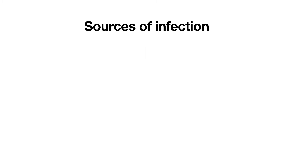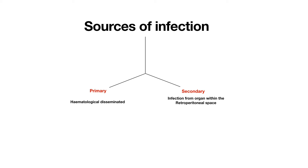Based on sources of infection, retroperitoneal abscess can be divided into two groups: primary or secondary. In primary retroperitoneal abscess, the infective source is usually due to hematological dissemination. In secondary retroperitoneal abscess, the infection is usually from an organ which lies within the retroperitoneal space. Hematological dissemination in primary cases usually happens from the spine or muscle, while in secondary cases, pyelonephritis secondary to genitourinary infection is the most common cause.